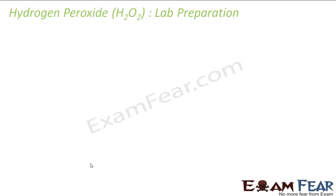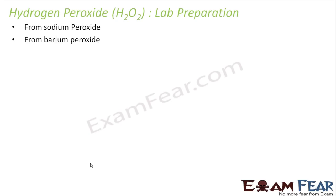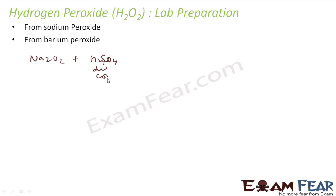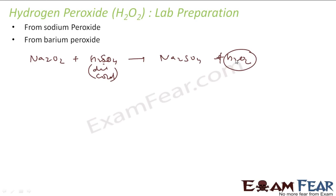To prepare hydrogen peroxide in the lab, there are two methods. The first is from sodium peroxide (Na₂O₂). You add dilute, cold H₂SO₄ to it — it must be cold, otherwise it will react too vigorously. This gives Na₂SO₄ and H₂O₂. The sulfuric acid must be kept very cold to preserve the H₂O₂ produced.